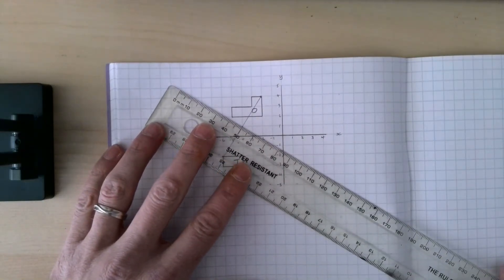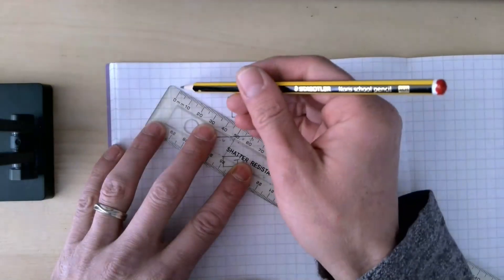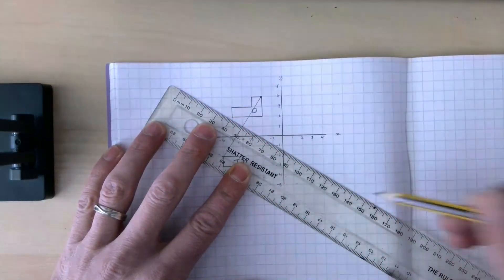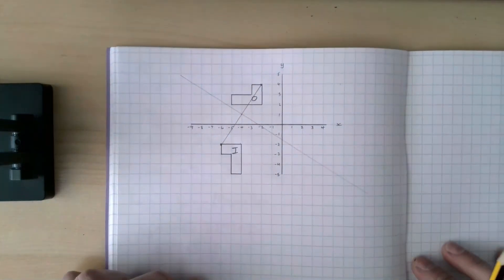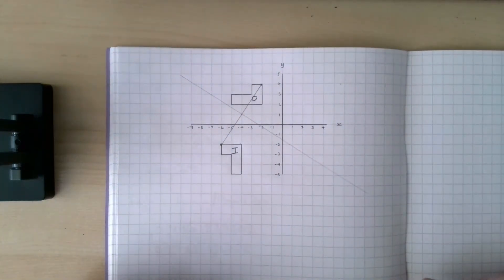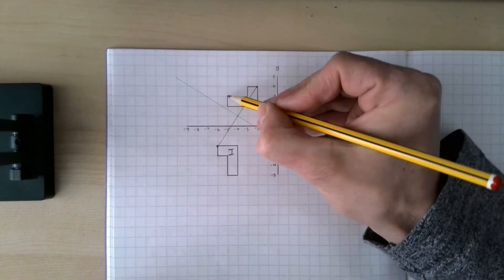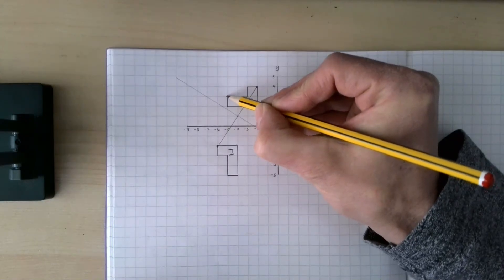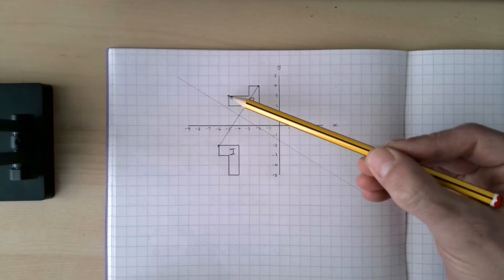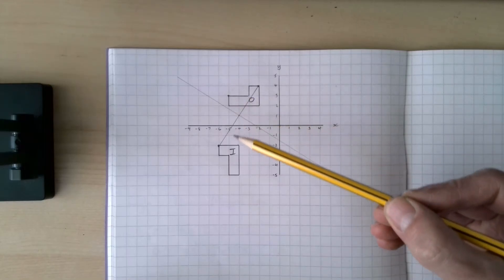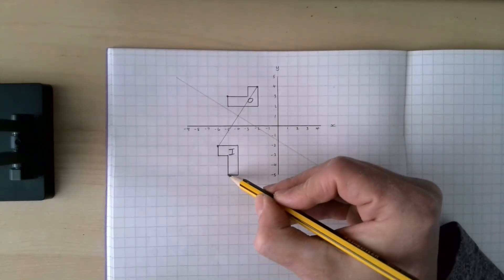That will set me up to find the center. I need to do that again with another pair of corners. Let's try this top corner here, top left corner there. Where's the same one on the image? That one will be that one. Oh, that's nice and easy, straight down underneath.